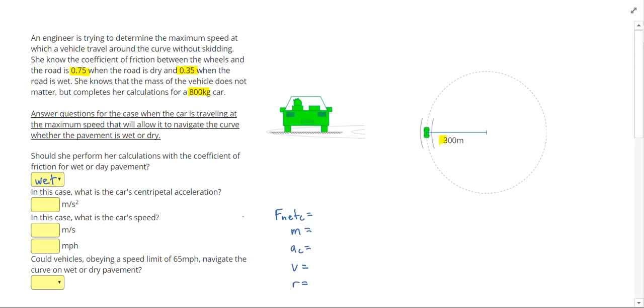I also see that I have one more given over here. Since we are performing the calculations when the road is wet, we have this coefficient of 0.35. I'm going to write that down, so mu equals 0.35.